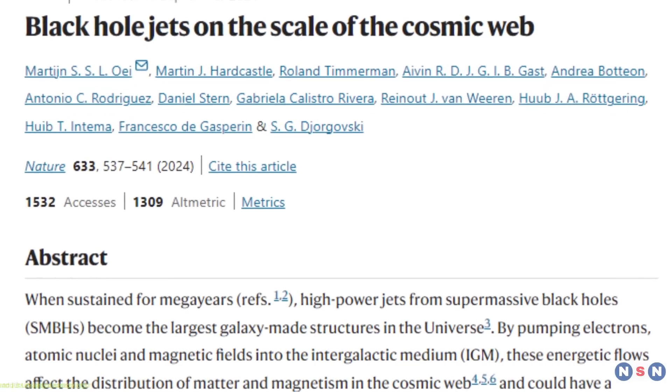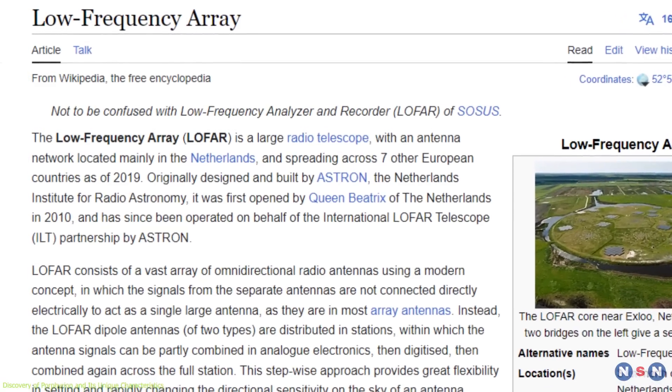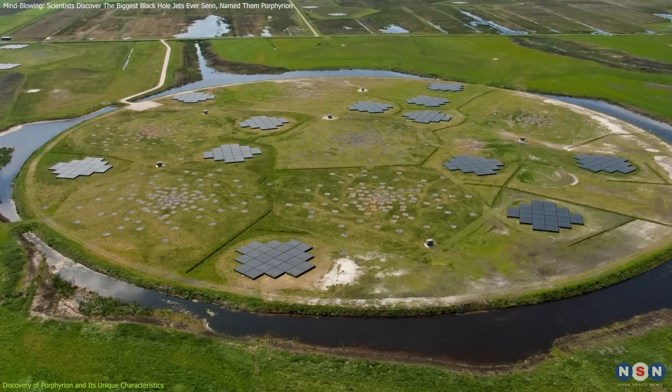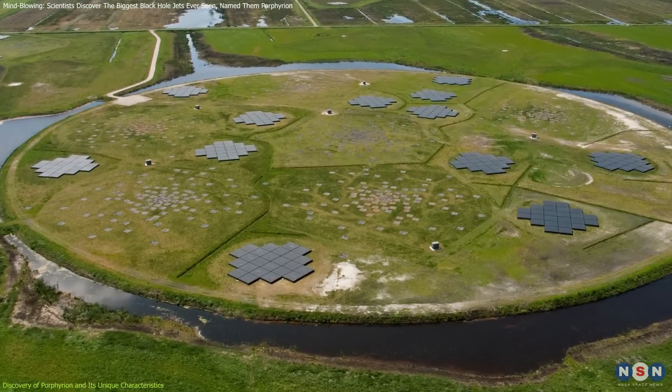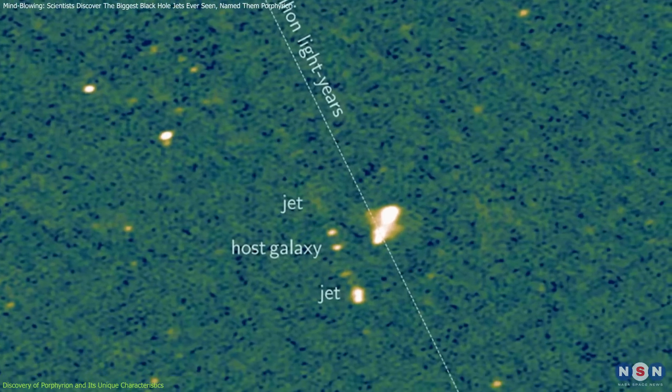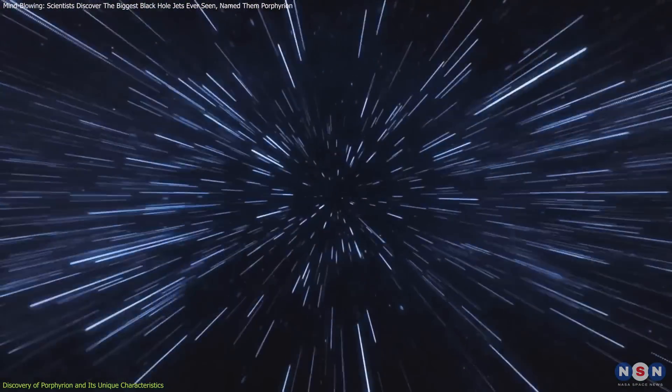Porphyrion was discovered by a team of astronomers using Europe's LOFAR, Low Frequency Array Radio Telescope, a network of radio sensors stretching from Sweden to Bulgaria. This massive jet system originates from a supermassive black hole sitting at the heart of a distant galaxy, around 7.5 billion light-years from Earth.